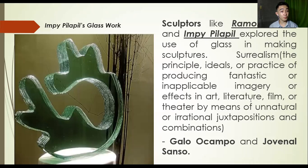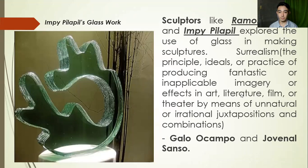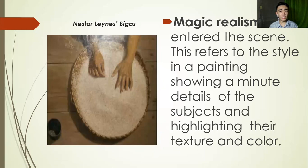Surrealism was a cultural movement which developed in Europe in the aftermath of World War I and was largely influenced by Dada. The movement is best known for its visual artworks and writings and the juxtaposition of uncommon imagery. The known surrealists of this time were Gallo Ocampo and Jovenel Sansa. Magic realism also entered the scene — this refers to the style in painting showing minute details of the subject and highlighting their textures and color.